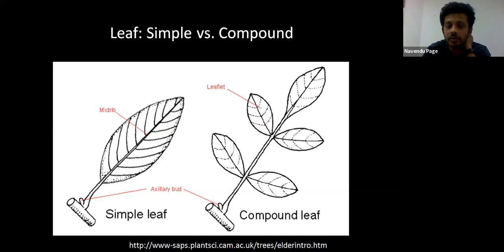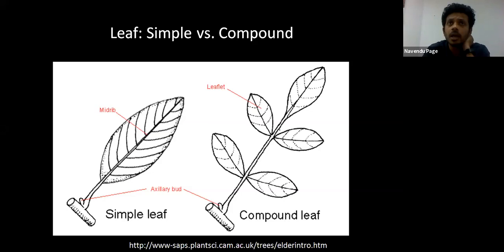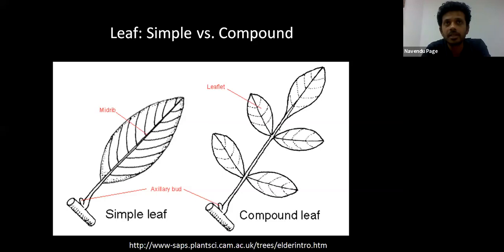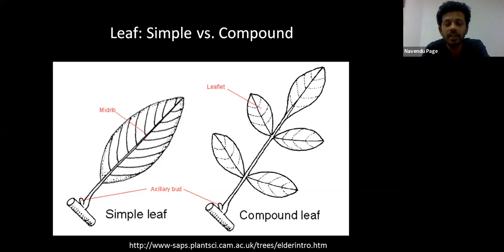The most fundamental dichotomy in identifying plants is the distinction between a simple and a compound leaf. Although it might seem trivial at first, this distinction is actually far more profound and extremely helpful in identifying plants. It's not always easy to distinguish a simple leaf from a compound leaf — as you will realize through the course of this presentation, it's actually quite tricky.